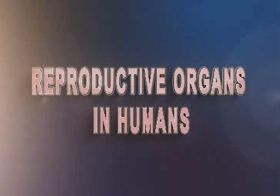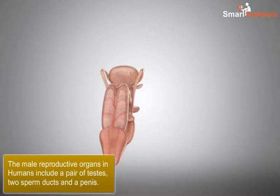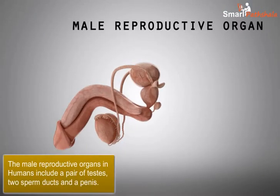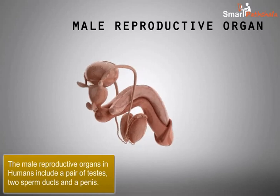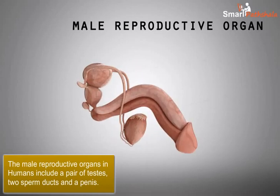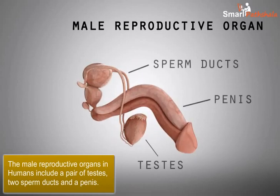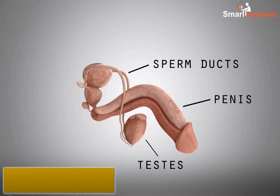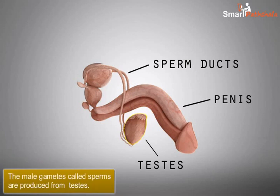In this module, let us learn about the various reproductive organs in humans. The male reproductive organs in humans include a pair of testes, two sperm ducts, and a penis. The male gametes called sperms are produced from testes.